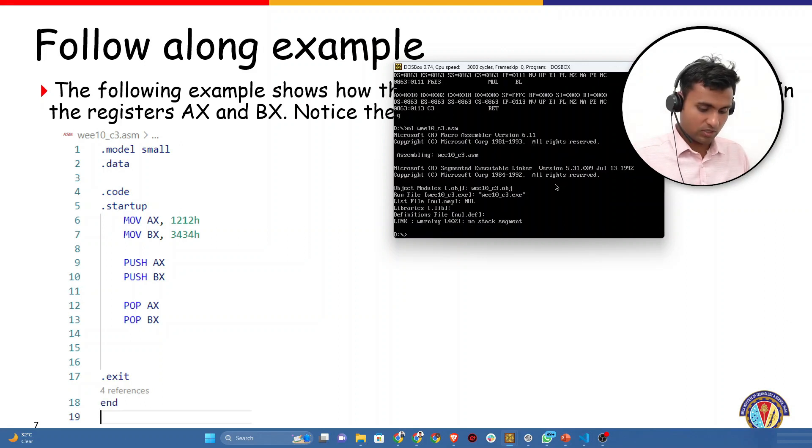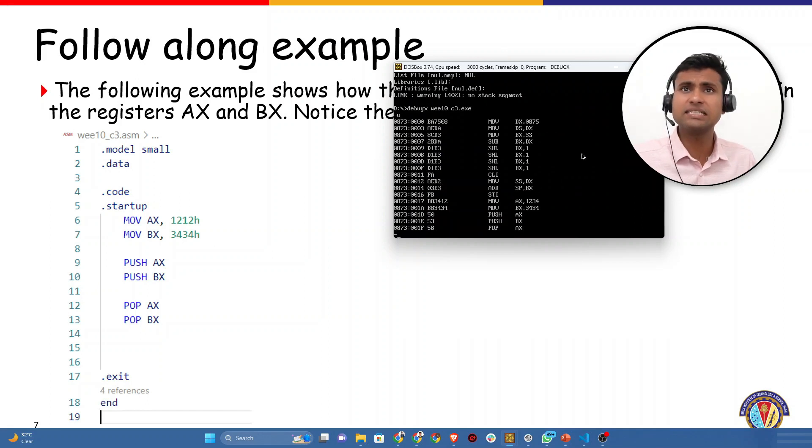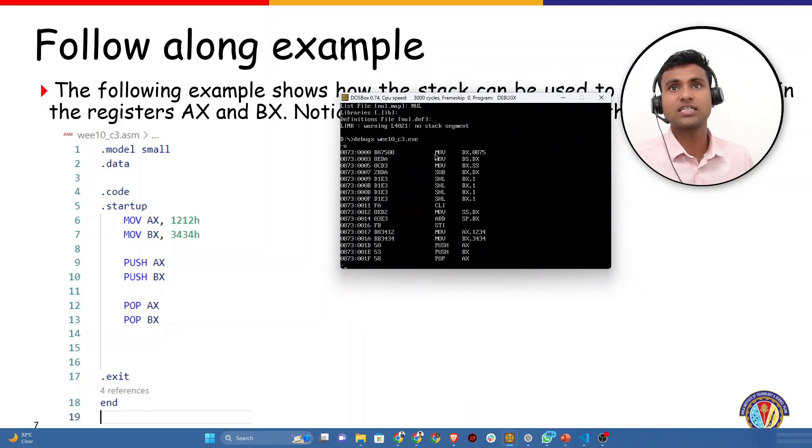ml. Now let's execute this: debug x. Just to inform you, I'm using the model small in order to have access to all the stack pointers separately. It's best to use model small when we are dealing with stacks, and because of that we have a .exe appearing here.